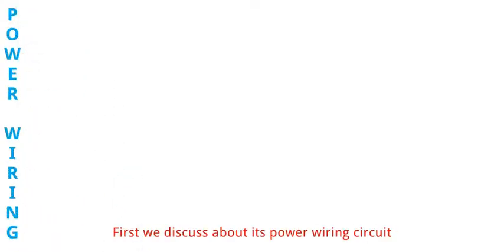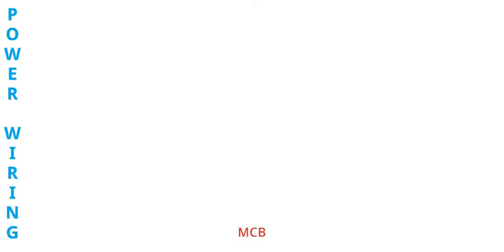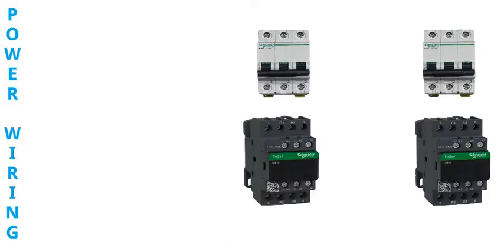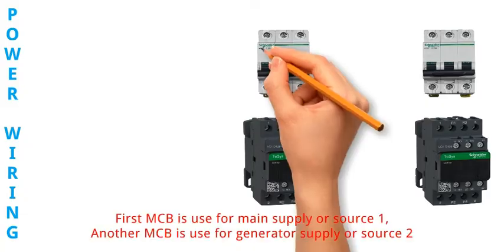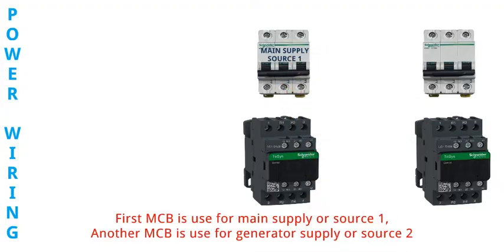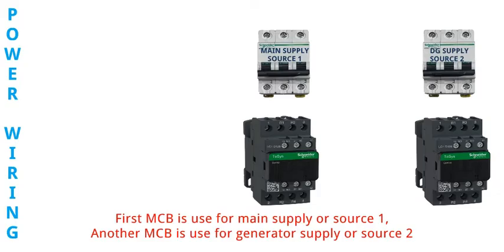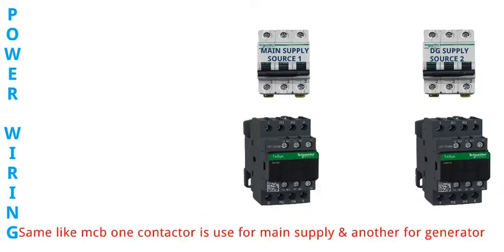First we discuss about its power wiring circuit. Its main power components are MCB and contactor. First MCB is used for main supply or source 1. Another MCB is used for generator supply or source 2. Similarly, one contactor is used for main supply and another for generator.